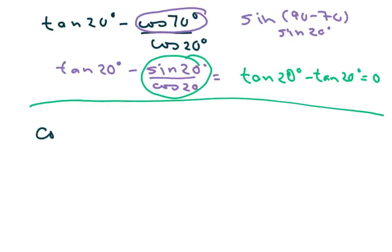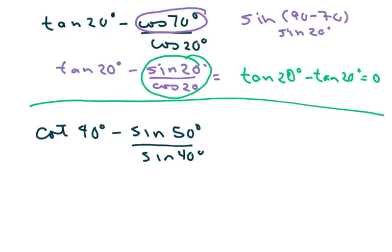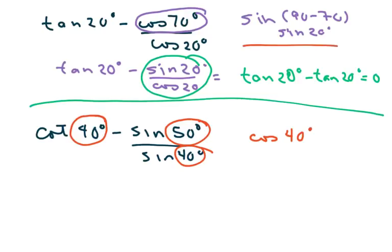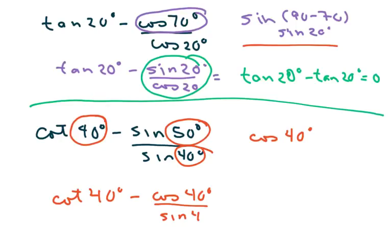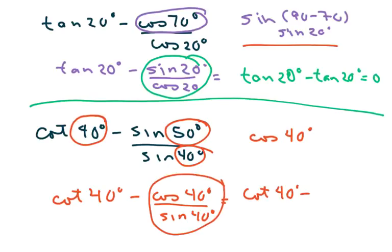The next problem is very similar. We have cotan of 40 minus sine of 50 over sine of 40. When you see something like this, you want all the degrees to be the same — this is a 40 and this is a 40. I'm going to change sine of 50 to 40 using the complementary angle theorem, so this becomes cosine of 40. We get cotan of 40 minus cosine of 40 over sine of 40, which equals cotan of 40 minus cotan of 40, which equals 0.